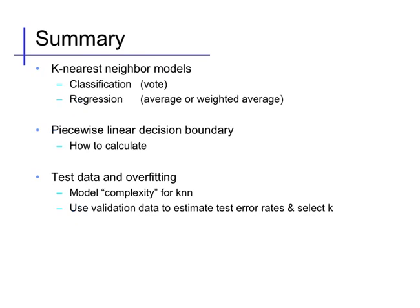So in summary, k-nearest neighbor methods use the k-nearest examples to make predictions. Typically in classification, we use a majority vote out of those k-nearest neighbors, and in regression we use an average or possibly a weighted average to combine them.